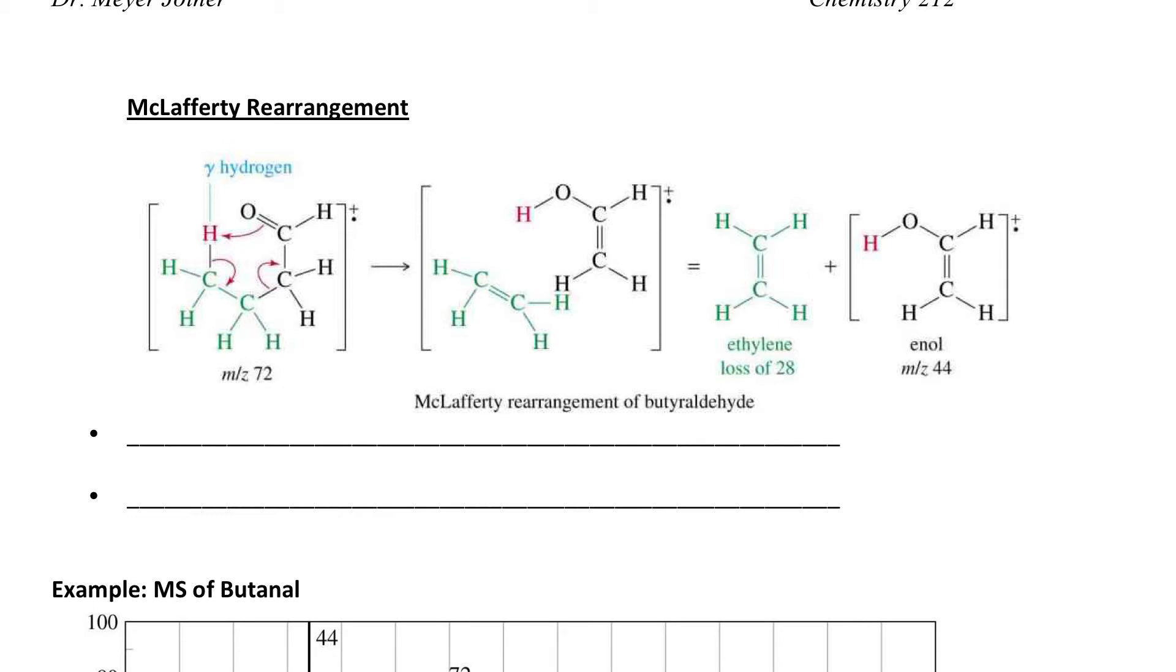A McLafferty rearrangement is when a keto group, so it could be an aldehyde or ketone, other things too actually but that's our most common, undergoes beta cleavage. So it means it cuts the bond between alpha beta, and as it does that it picks up a gamma H.